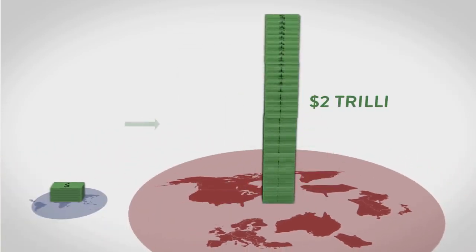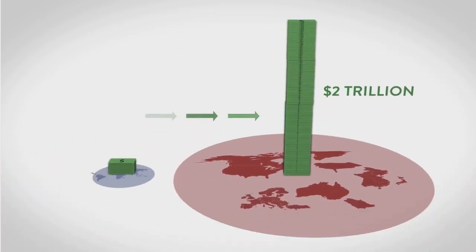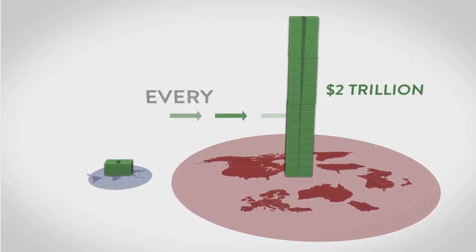Economists from the University of Massachusetts calculate that this costs poor countries about 500 billion dollars a year. Altogether, that's more than 2 trillion dollars that flows from some of the poorest parts of the world to the richest. Every year.